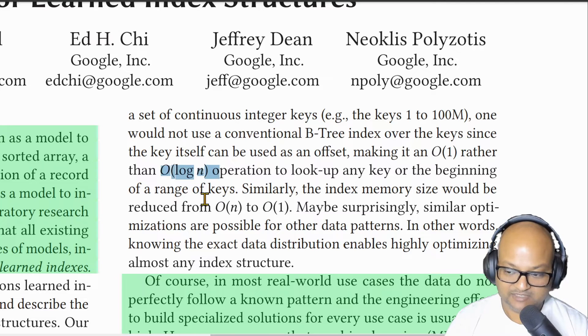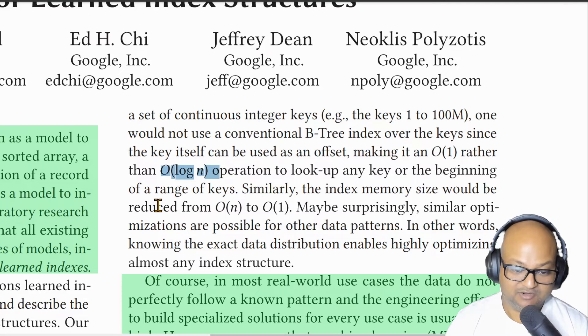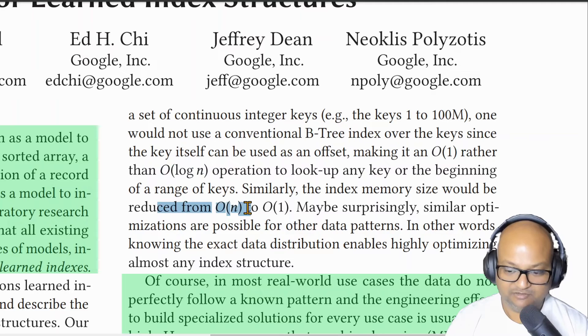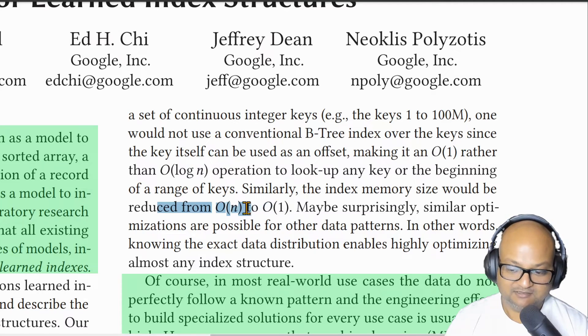And in terms of size, you wouldn't need to store anything in your index at all. So you would have reduced the size of your structure down from order n to order one.